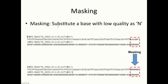Masking is basically substituting a base with low quality as N. The last six bases have low quality but have base calls — A, A, A, A, A, and C. But those bases are not really trustable. So instead of putting A, A, A, A, A, A, C, why not put N, N, N, N, N, N, N? N here stands for any base — any of ACGT.